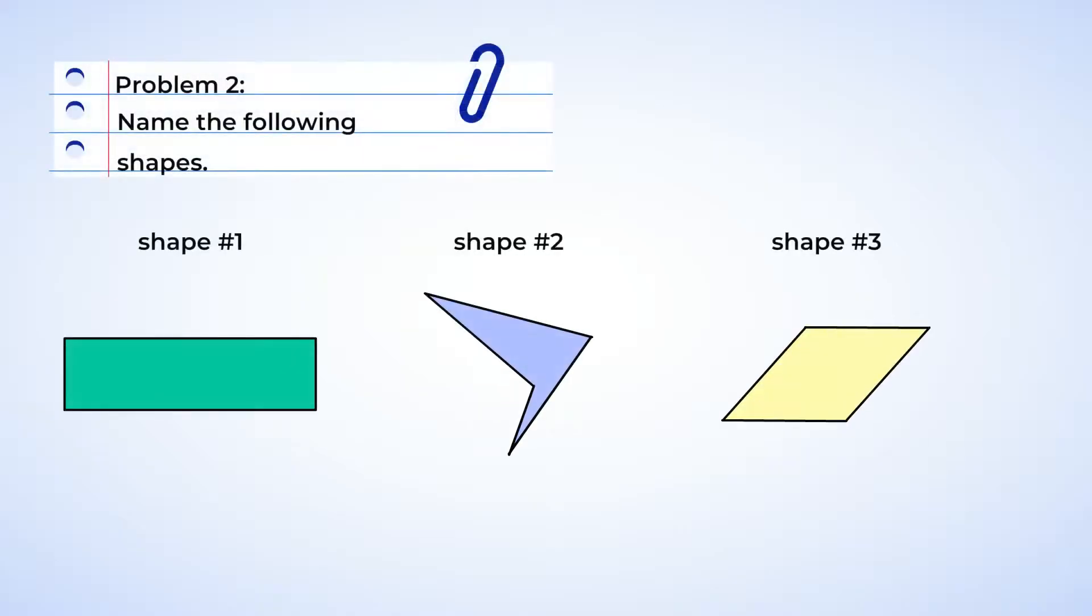Name the following shapes. Alright, problem two, we need to name the following shapes. Well, let's start by counting the sides. One, two, three, four. They all have four sides. Wait, this means they're all quadrilaterals.